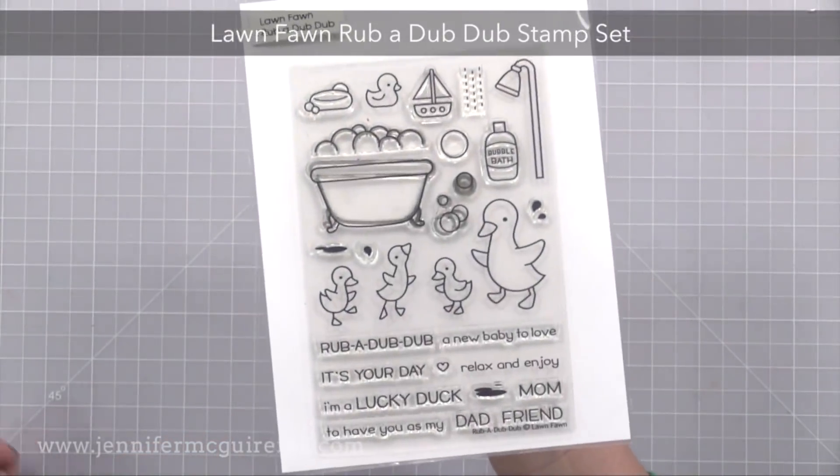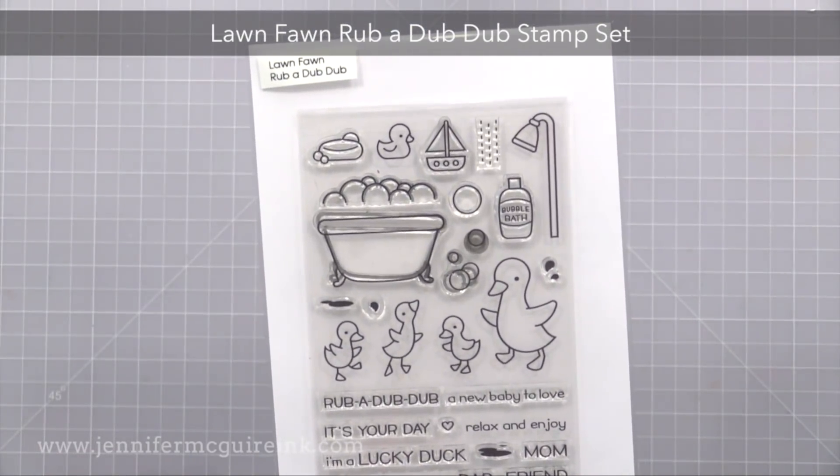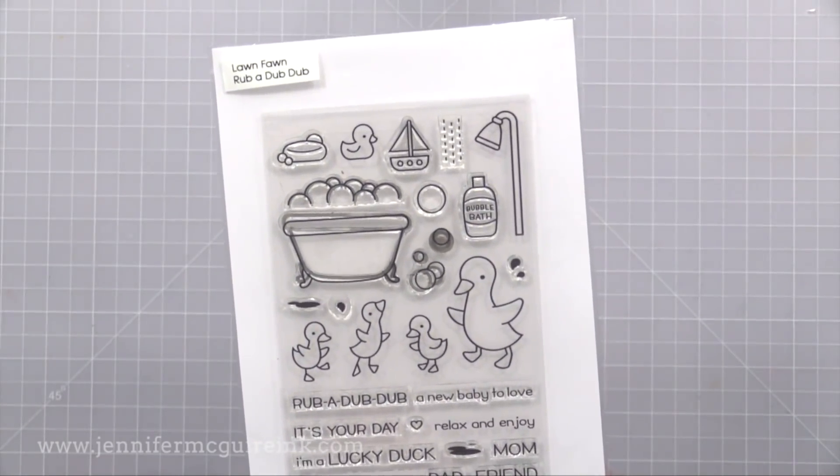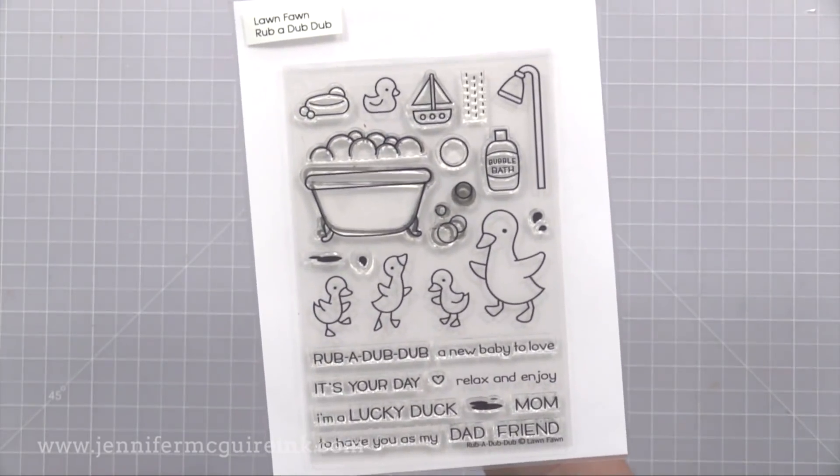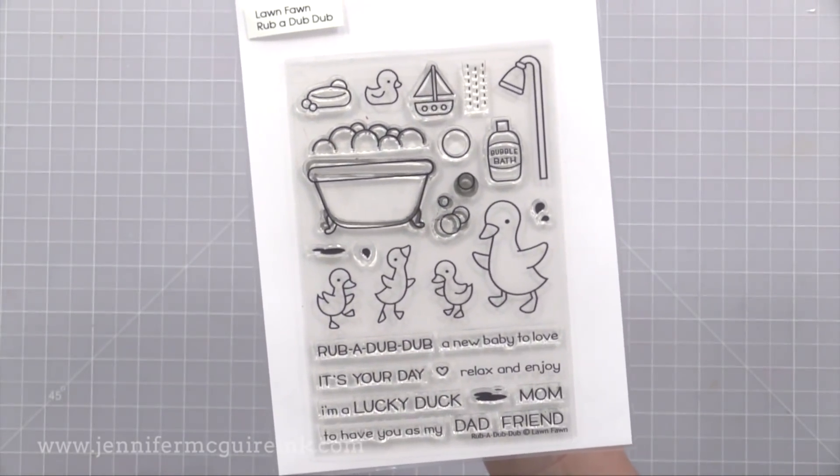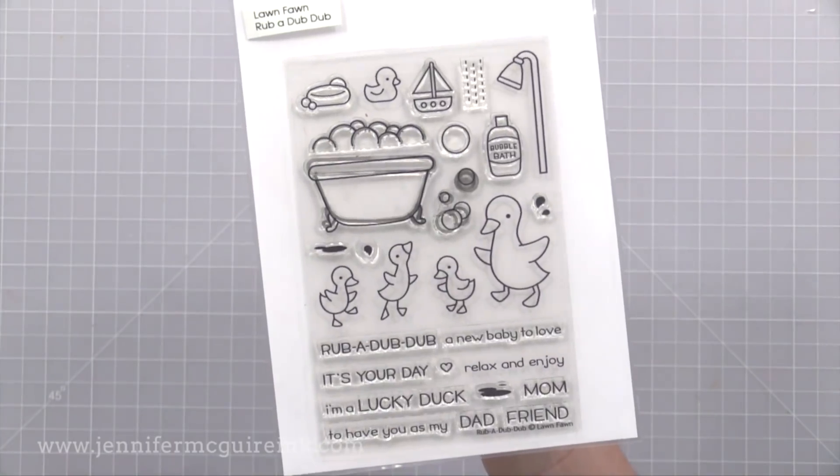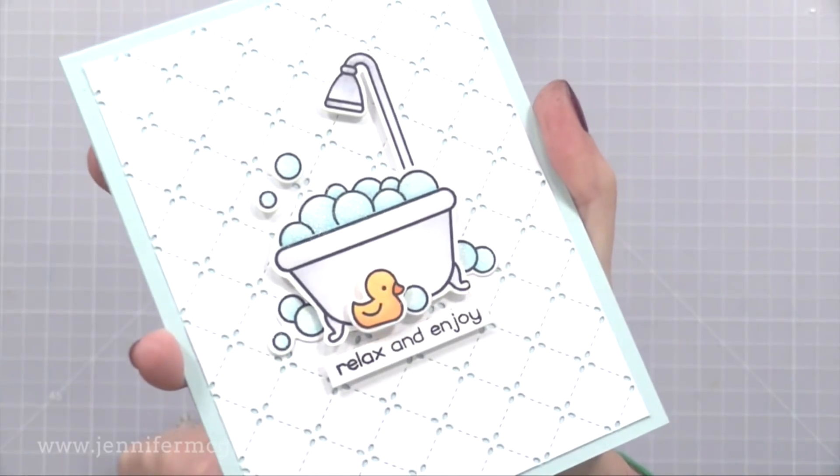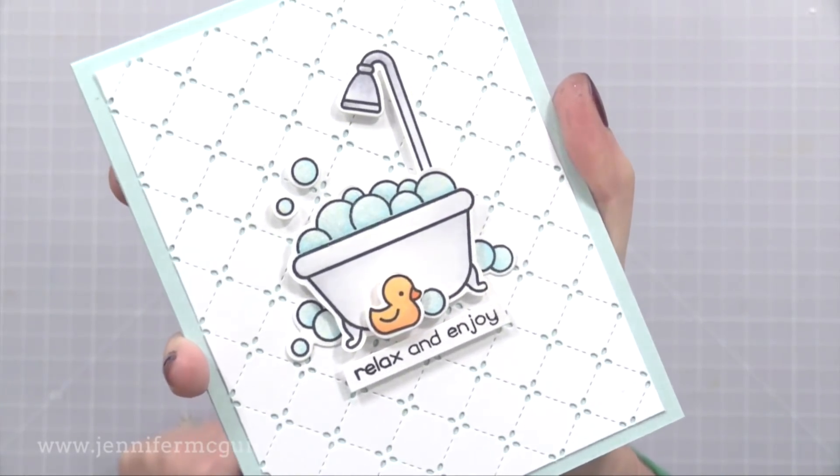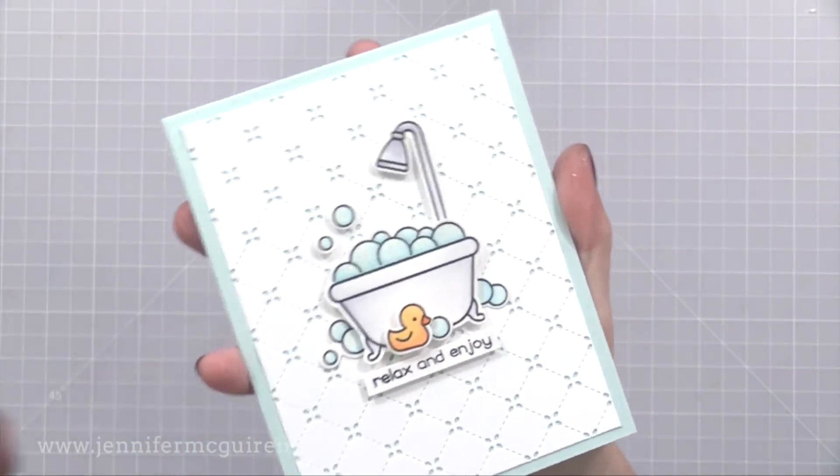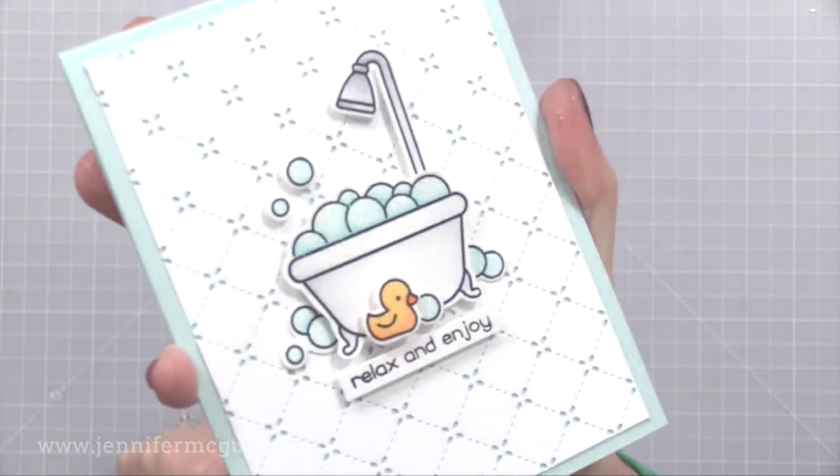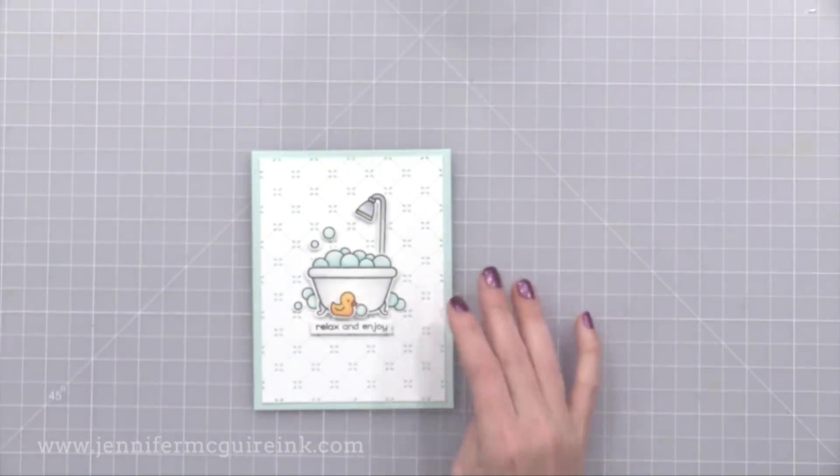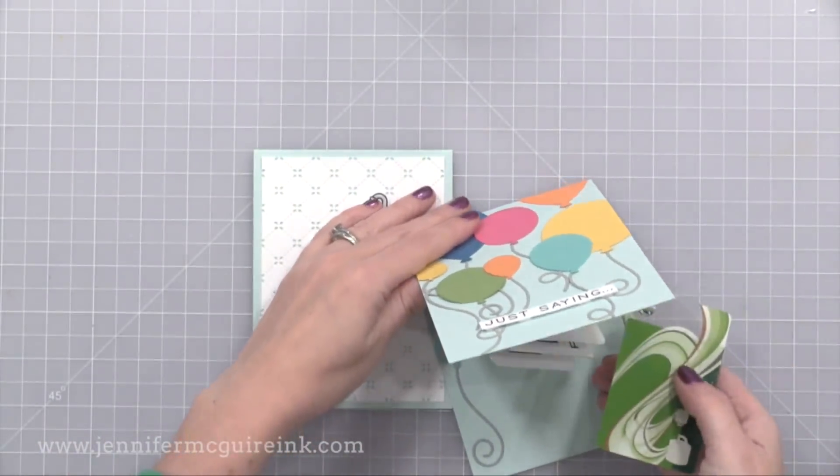I also used the new Lawn Fawn Rub A Dub Dub stamp set. This has some adorable little ducks and little bath images. I used the bath images on this card but I do want to make one with the little ducks where I can stamp I'm a lucky duck to have a friend like you. Here is the card I created with these two products. Very simple to create. I die cut the backdrop and I trimmed a little bit off the sides so my note card would show through. I also die cut all of those little images and colored them and just adhered them with foam tape to the front.